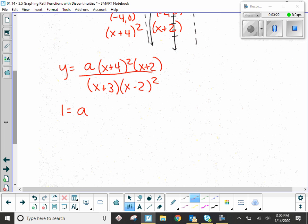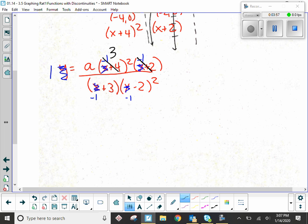So 1 in for y. A stays A because we're trying to figure it out. And a negative 1 goes in. I'm going to be a little bit lazy here just to save up some time. I'm just going to write over my red stuff. 1 is for y. Negative 1 for all the x's. This set is negative 1 plus 4, which is 3. This set, negative 1 plus 2, which is 1. Negative 1 plus 3 is 2. Negative 1 minus 2 is negative 3.